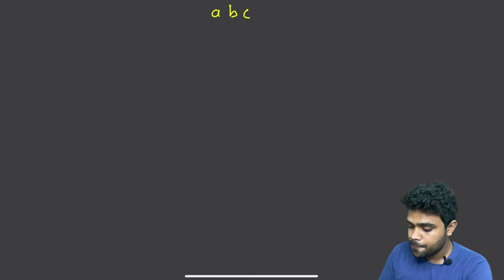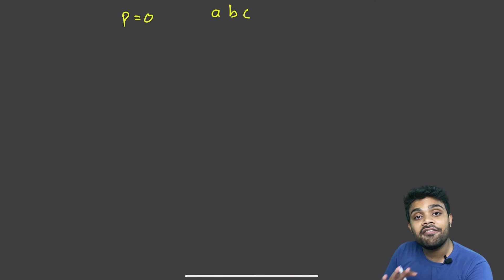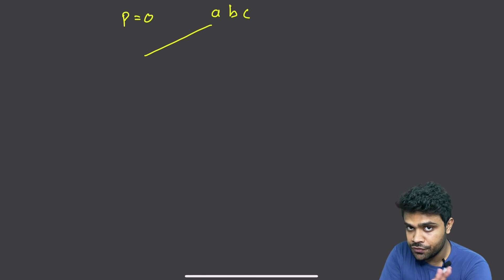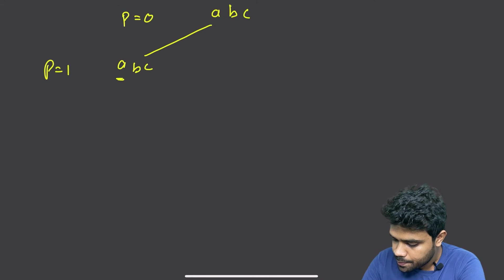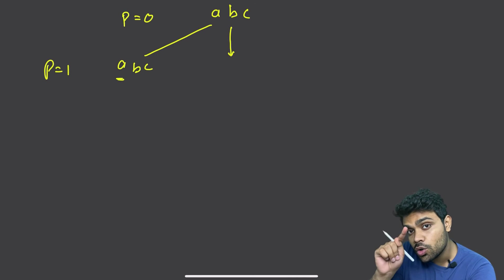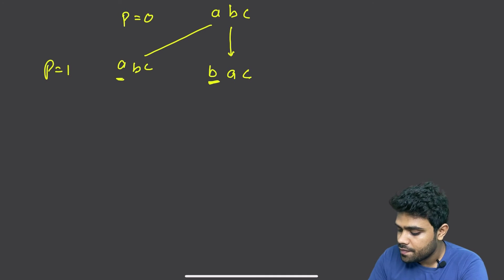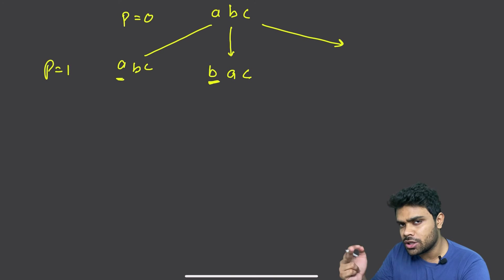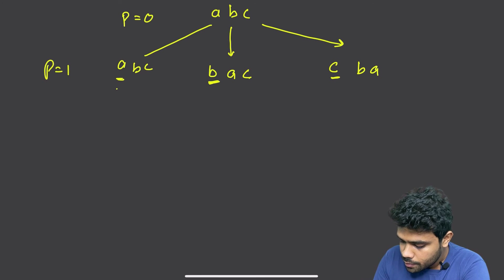Let me draw the recursion tree so you can understand it better. Taking the example of ABC, position starts at zero. At position zero I bring every element: first A is already there, so A is fixed and we recurse with position one, B and C remaining. Then I bring B to position zero — A and B swap — so B is fixed, then A and C remain. Then I bring C to position zero — A and C swap — so C is fixed, then B and A remain.